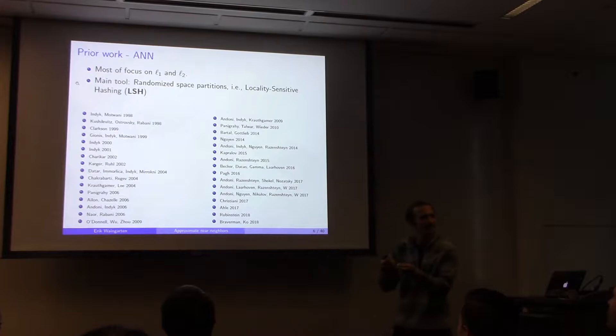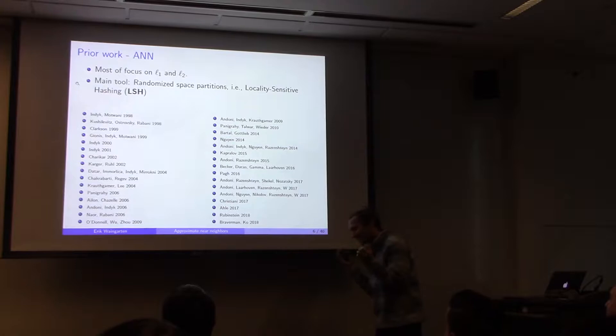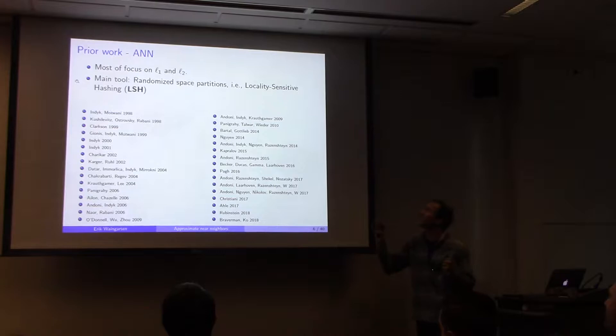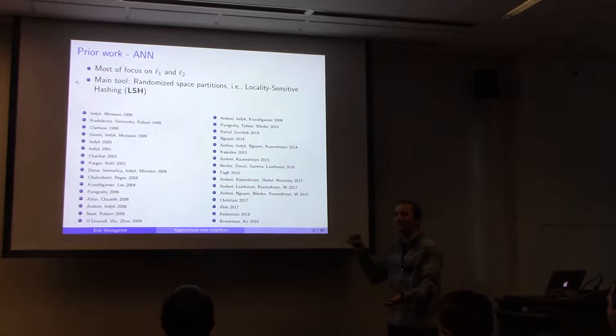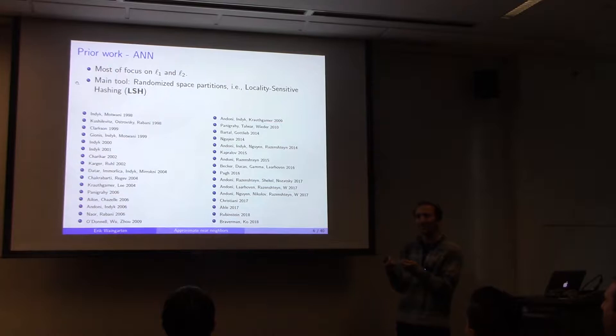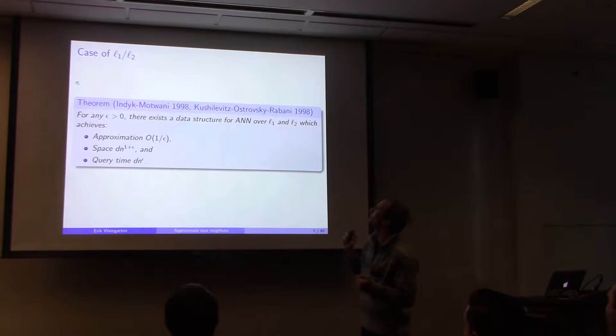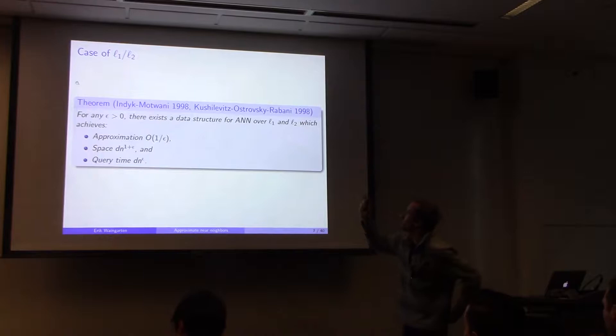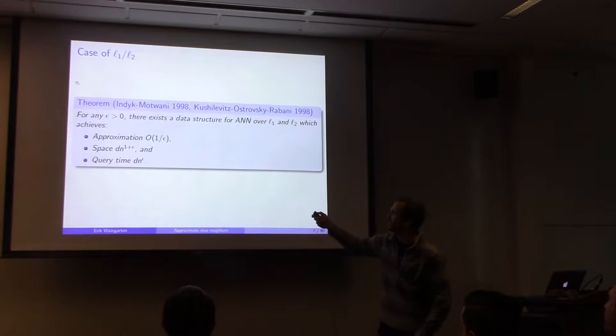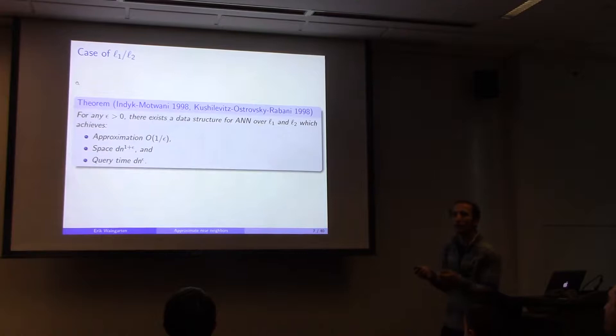Prior work has really focused on when the underlying distance measure is L1 or L2. The main tool here — the catch-all phrase — is randomized space partitions, or locality-sensitive hashing (LSH). The idea is to partition the underlying vector space so that close points likely collide under a hash function. Already in 1998, papers by Indyk-Motwani and Kushilevitz-Ostrovsky-Rabani showed that for any epsilon, there's a data structure for approximate nearest neighbors over L1 and L2 achieving approximation 1/epsilon, with space and query time both d times n^epsilon.